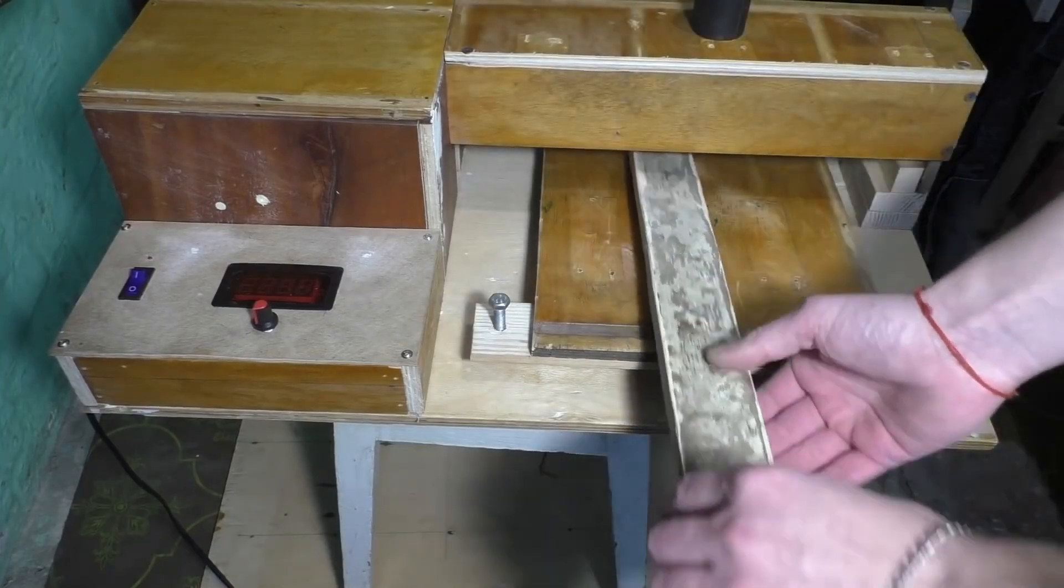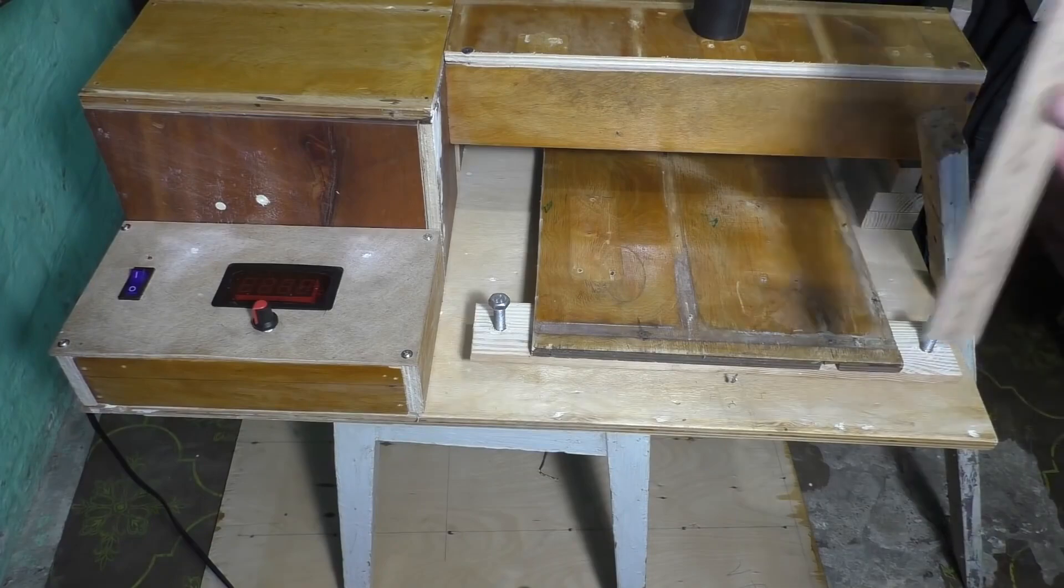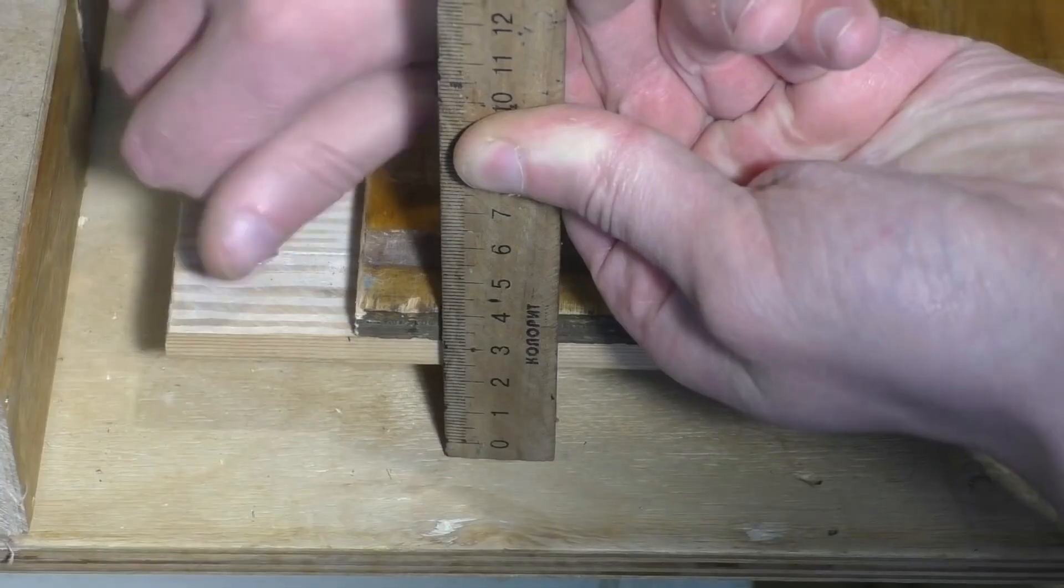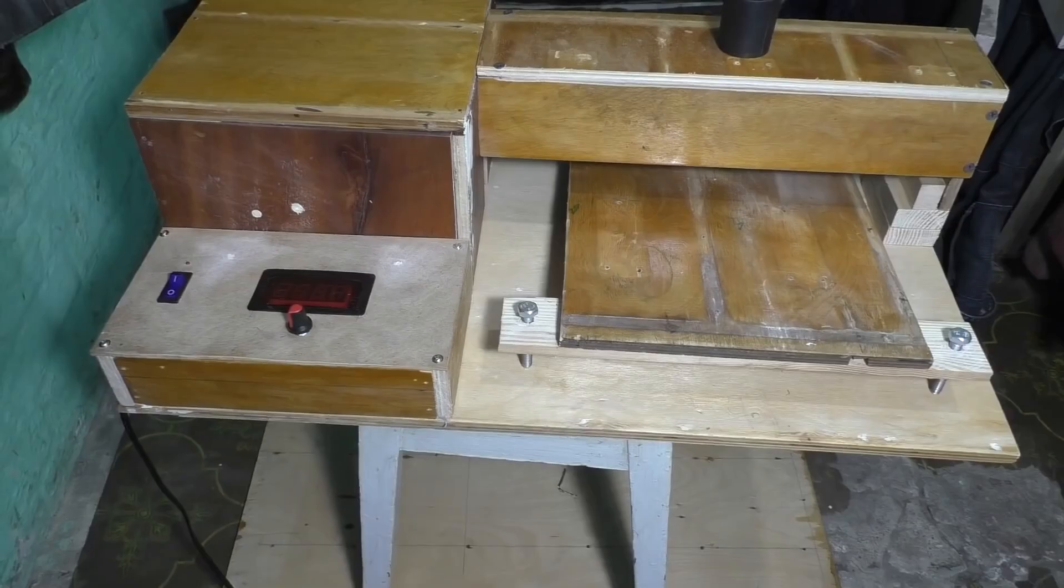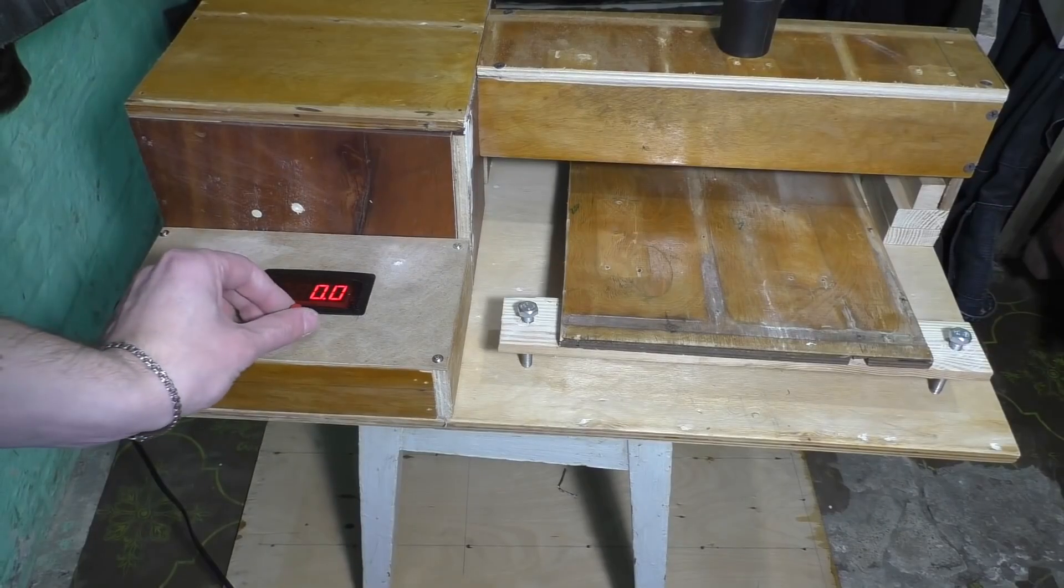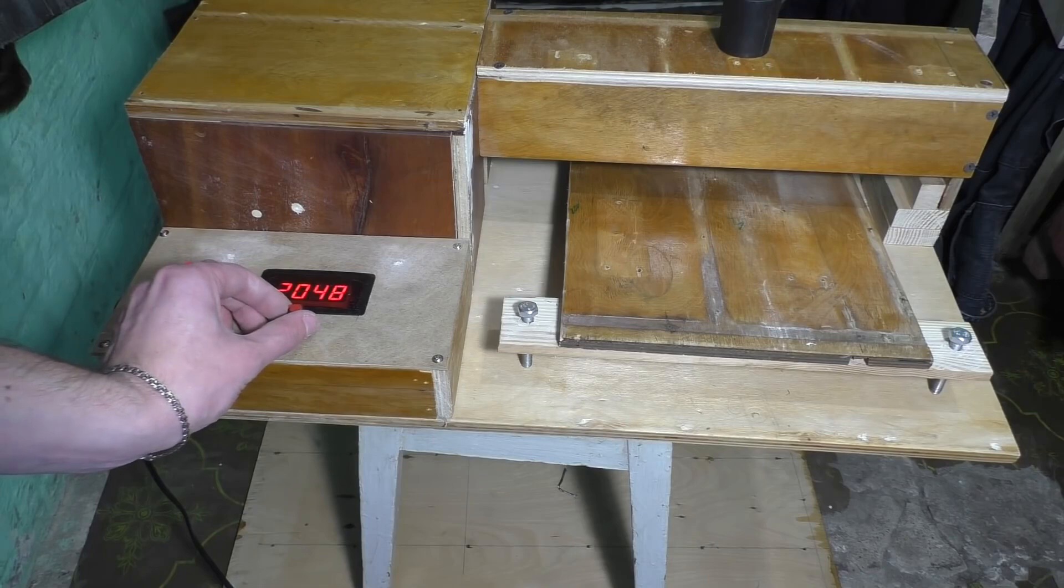And now let's move on to testing the machine we've built. With the help of bolts, we adjust the height of the drum for different board sizes. Now we turn it on and set the speed. This motor starts at around 3000 and can do even more. Check the description for a link on where to buy one like it.